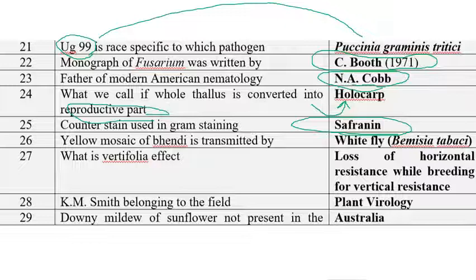LO mosaic of bhindi is transmitted by whitefly — Bemisia tabaci. The Vertifolia effect refers to the loss of horizontal resistance while breeding for vertical resistance. While breeding for vertical resistance, horizontal resistance can be lost — that is the Vertifolia effect.